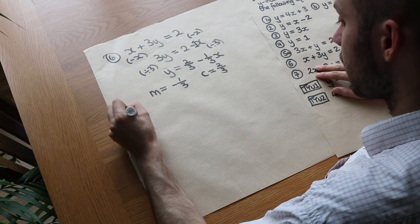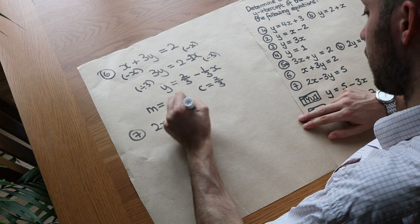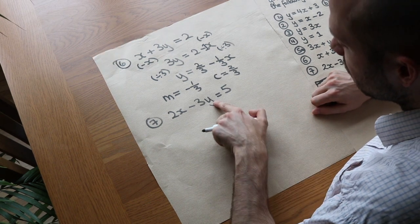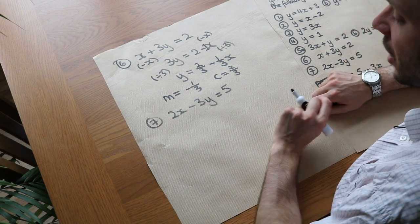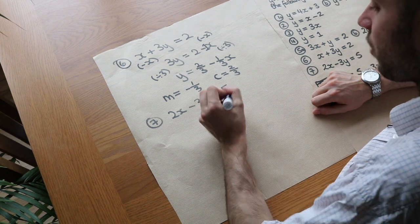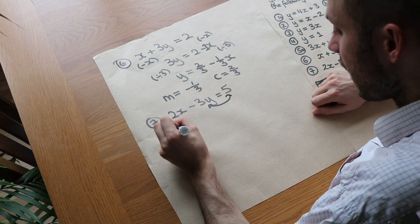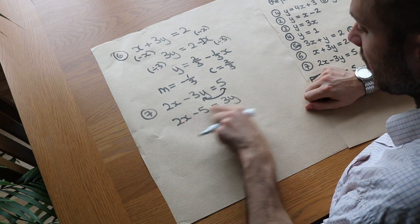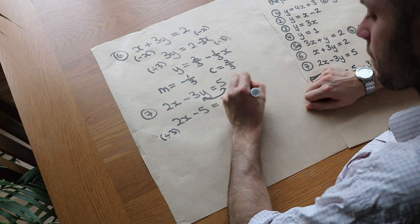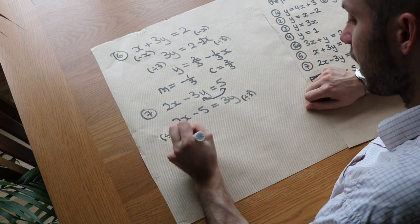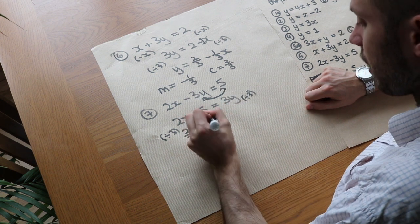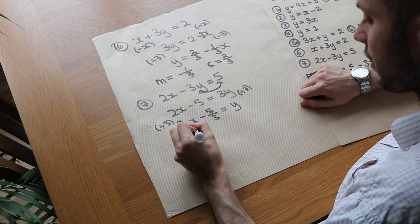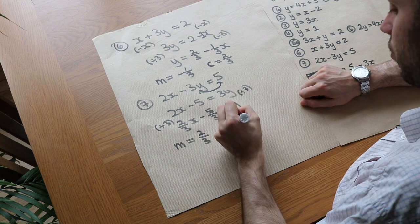Finally, the hardest one — question 7: we've got 2x minus 3y is equal to 5. We're going to make y the subject again. Since y is being subtracted, we can use the swapsy trick: swap the thing being subtracted and the result to get 2x minus 5 equals 3y. Now divide both sides by 3, dividing each individual term: we get two-thirds x minus five-thirds equals y. The gradient m is the coefficient of x, which is two-thirds. And the y-intercept c is the constant term, minus five-thirds.